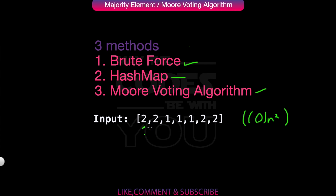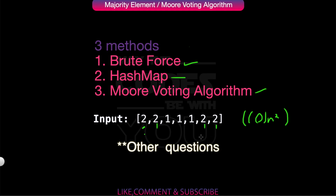In a dry run of the brute force approach, if we are at element 2, the frequency count will go up to four. But it will not be applicable to other solutions, so we should look at more optimized methods.